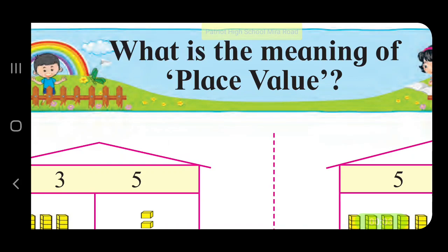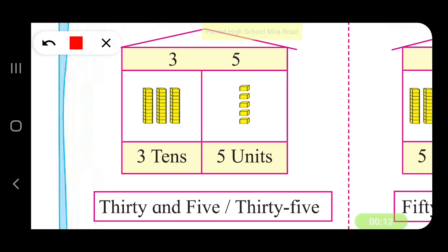What is the meaning of place value? Let us consider the number 35. In 35, 3 is in the tens place and 5 is in the units place.